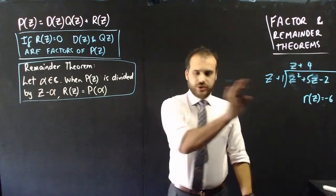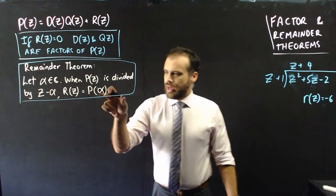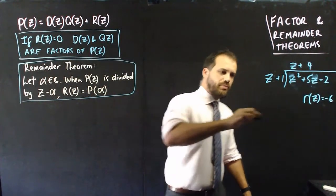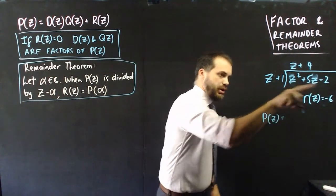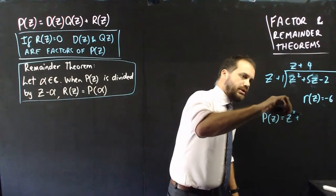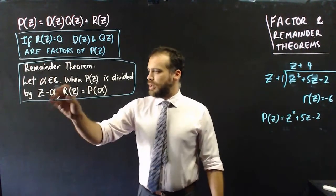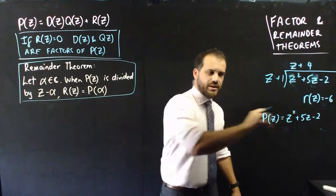So when I do that, the remainder should be equal to P alpha. So let's see if that's true. I know that my remainder was negative six, but also, if P z was equal to my original building here, z squared plus 5z minus 2. If I now sub in alpha, I should get a remainder of negative six.